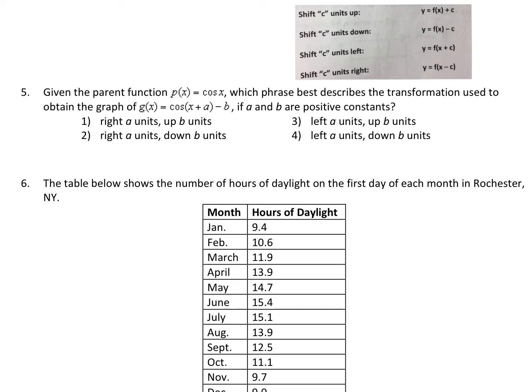So we're going to be going to the left 'a' units. So far it's either choice three or four. Now if we subtract the number from the end of a function — see right here — it's moving it down. So we're going to be going down 'b' units. So choice four is our answer.